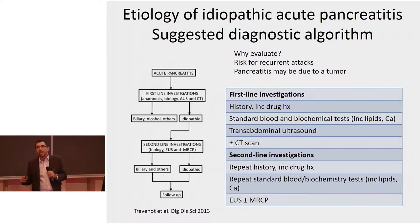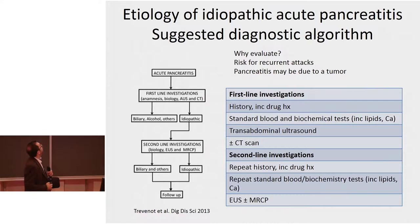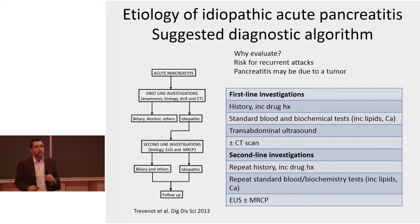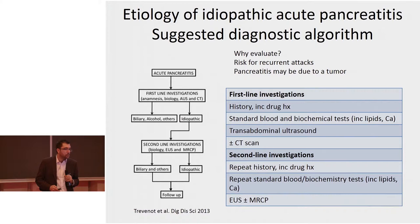There are many studies looking at what should be done in these patients, and many algorithms in the literature. Most people, after a first-time episode of acute pancreatitis of unknown cause, would do some standard blood tests and history, a transabdominal ultrasound, and some may also do a CT scan. Most people would consider EUS and MRCP second-line tests, and some may choose to perform them only after a relapse.